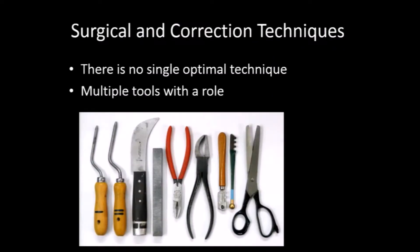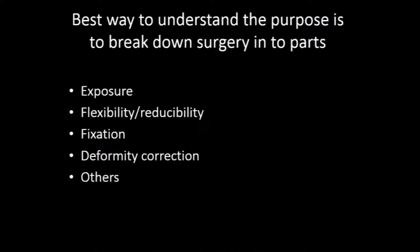So how do we do that? These are the tools in the toolbox — they're scary looking, but you don't use each one for every situation. There are certain situations where the tools are more appropriate than others. The way I always think of it is: you break down the surgery into parts. There's exposure — getting to the part of the spine that we want — and there's flexibility and reducibility, meaning if we have a stiff spine, we want to be able to straighten it out and put it in the positions we want.